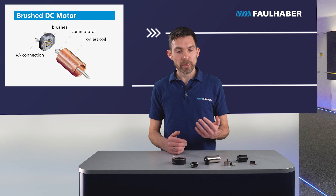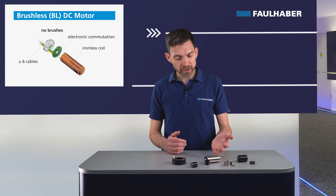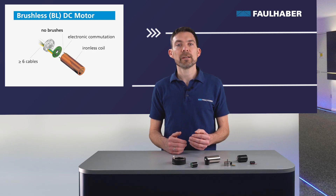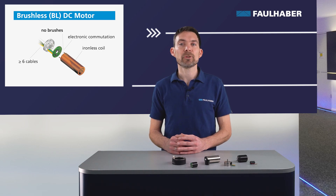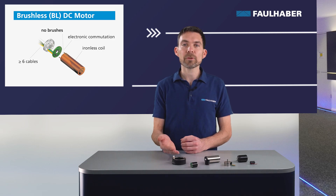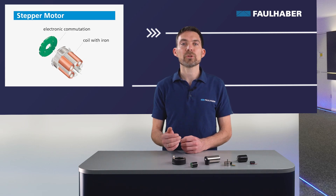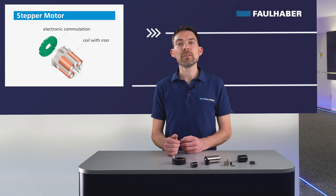Second, there are the brushless DC motors in slotless design for high dynamics applications. These motors have no brushes — commutation is done electrically. Last but not least, Faulhaber also offers stepper motors. By design, these motors do have a detent torque and also electrical commutation.